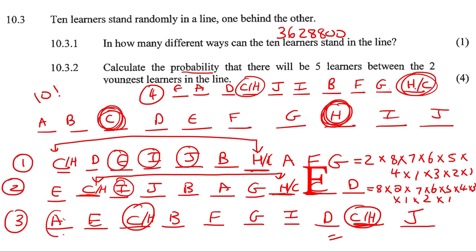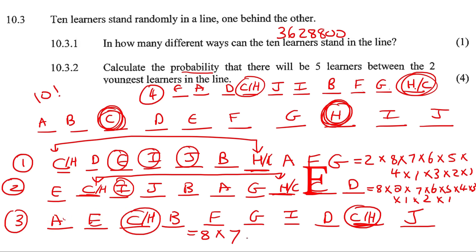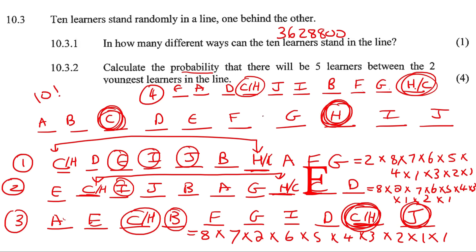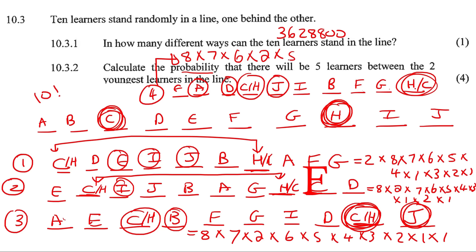For the third scenario, the first position had 8 options, second had 7, third had 2 for one of the two youngest, then 6, 5, 4, 3, 2, then 1 for the second youngest, then 1 remaining. For the fourth scenario, the first position had 8, then 7, then 6, then 2 for one of the youngest, then 5, 4, 3, 2, 1, and then 1 for the last person.